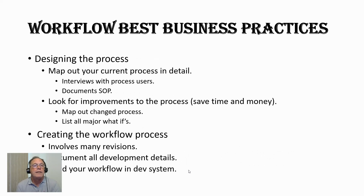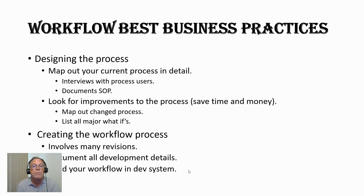Part of the designing process, the first step is to map out your current processes in detail. This involves interviewing the individuals that use the current process. For example, you take a purchase order from the start through to where it gets approved and map out each step along the way. You can also look at documents like standard operating procedures and regulations that must be considered. Once you've mapped everything as-is, you look for improvements to the process — basically the goal is to save time and save money. If it normally takes three days to process a PO because it's bouncing around, there may be a way to deal with it in less than an hour.